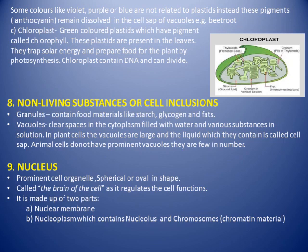The non-living substances, or cell inclusions, are parts included in the cell that are non-living. Granules contain food materials like starch, glycogen, and fats — starch is the storage food in plant cells, while glycogen and fats are the storage forms in animal cells.